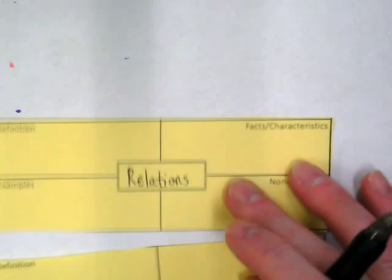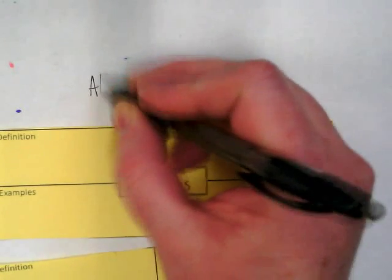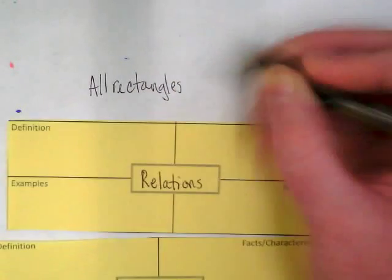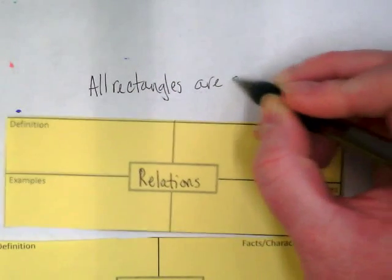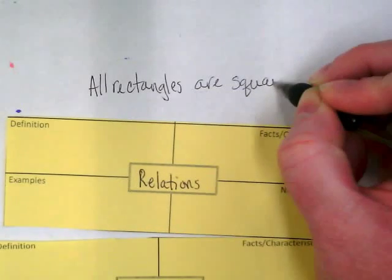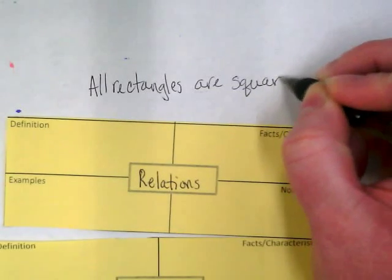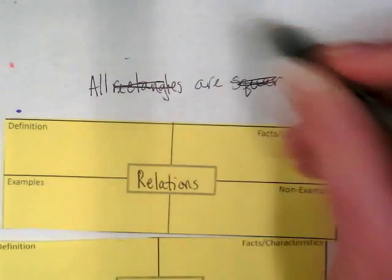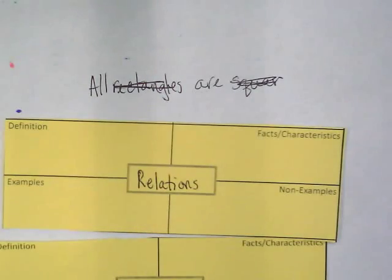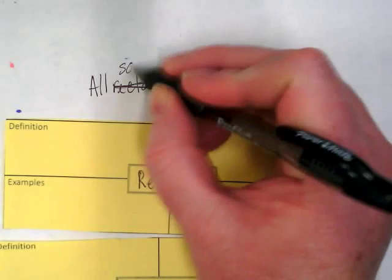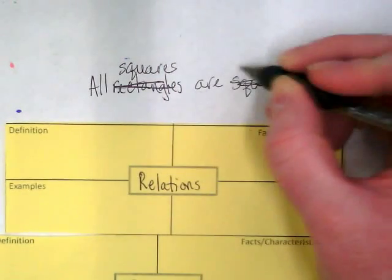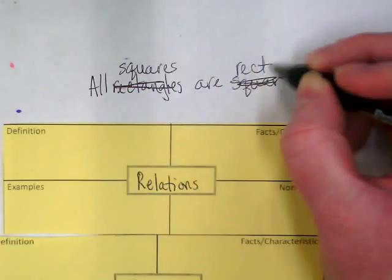There's an old phrase in math. Let me get this right: all squares are rectangles. I always do that backwards. All squares are rectangles, but not all rectangles are squares.